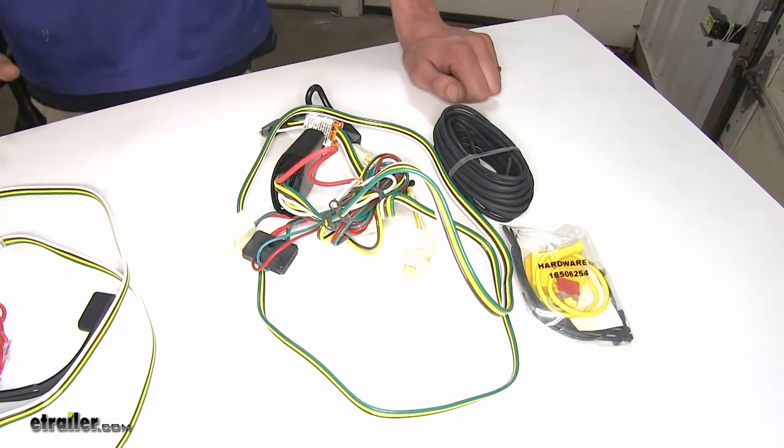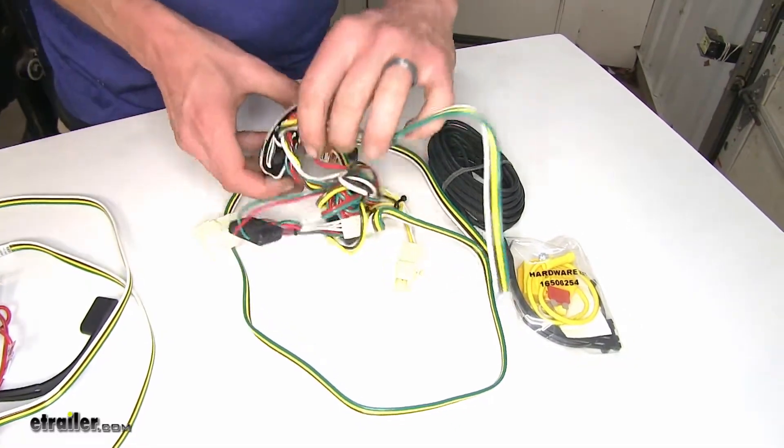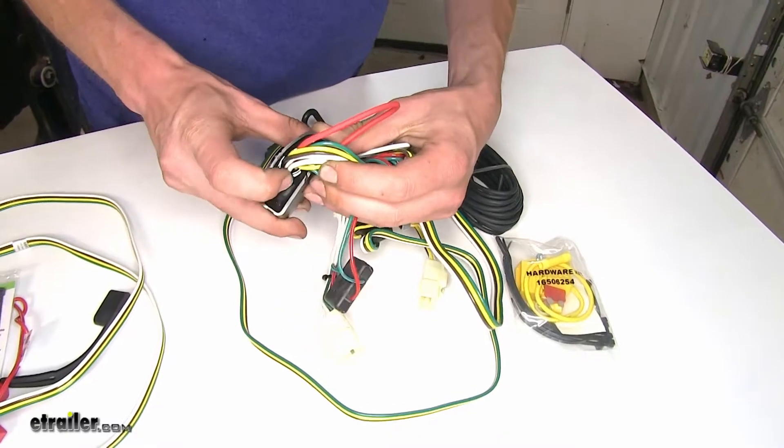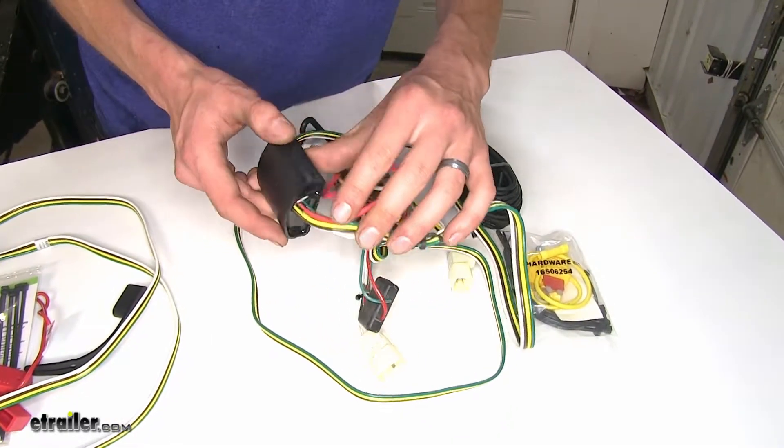Now the next biggest difference that we found comes down to construction quality. We found that on the Tekonsha here, you can see how it has this silica gel in here, which seals up our wiring harness very nicely.